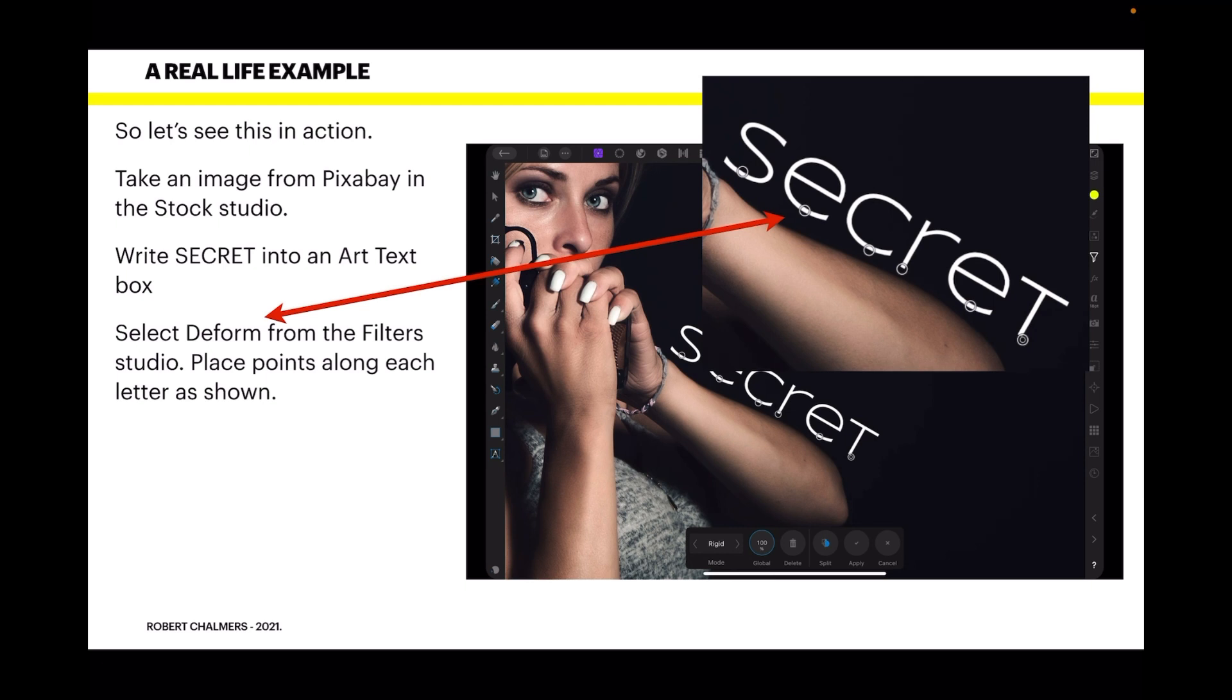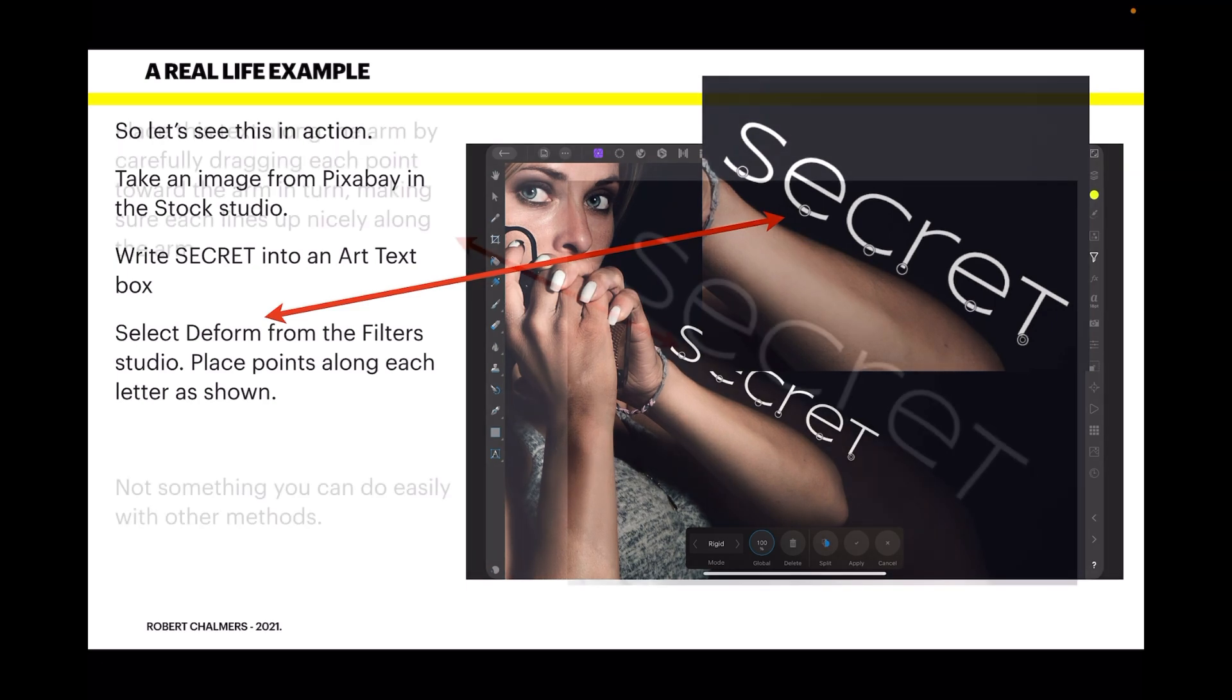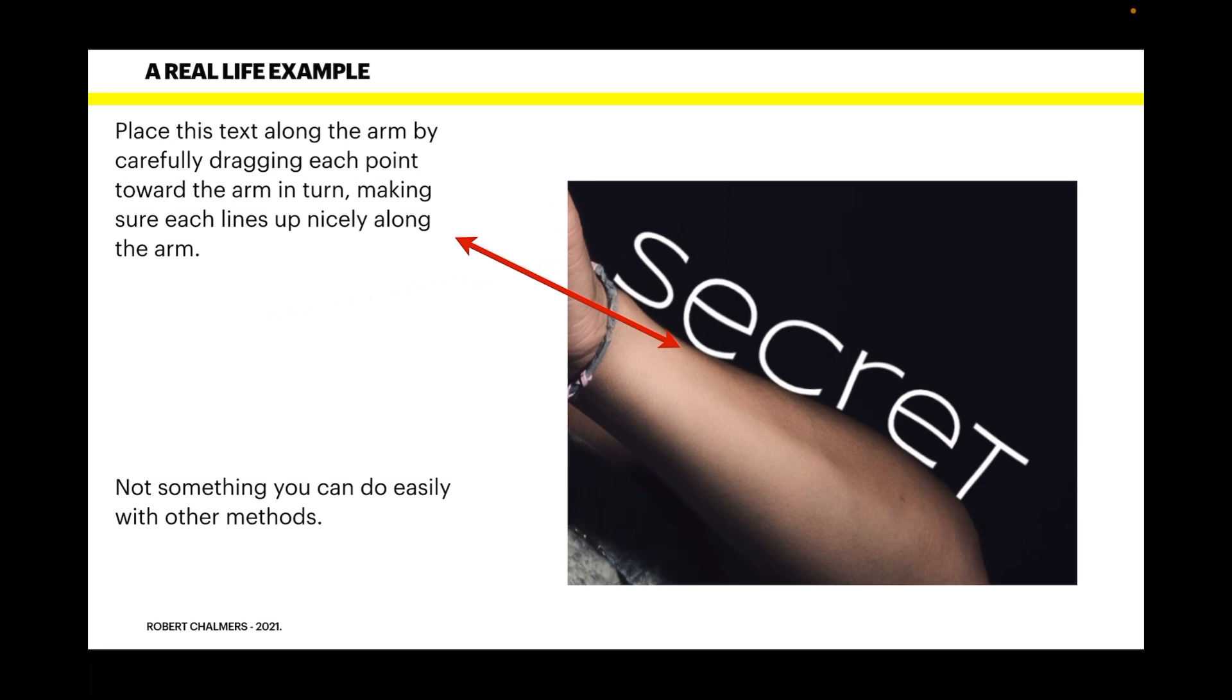And there you see it. Place this text along the arm by carefully dragging each point towards the arm in turn, making sure each lines up nicely along the arm. S-E-C-R-E-T. And they curve along the curve of the arm. It's not something you can do easily with other methods, because obviously it's deformed the letters slightly to conform to the curve of the arm.